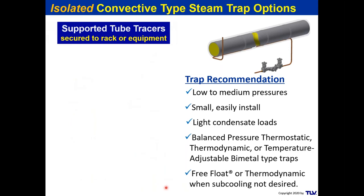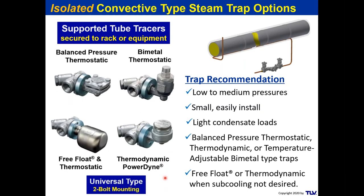For a supported convective tracer — mechanically secured — we still have similar pressure and condensate conditions but can use a heavier steam trap. A universal two-bolt mounting system works well here, using pipeline strainer connectors permanently installed in the piping so that a two-bolt steam trap can simply be bolted on and easily removed and replaced when maintenance is required.